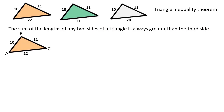Let's check the orange shape. The sum of AB and BC is less than AC. Therefore, we can't form a triangle with these parameters.